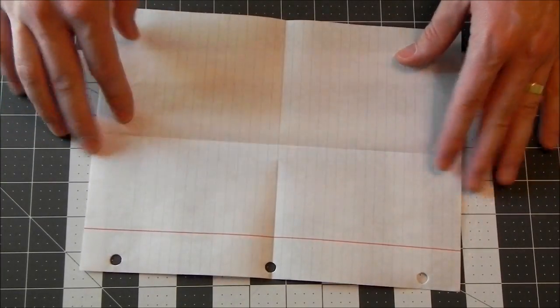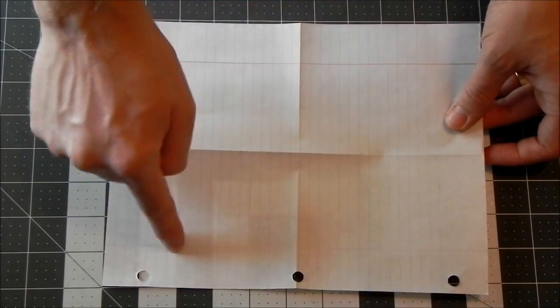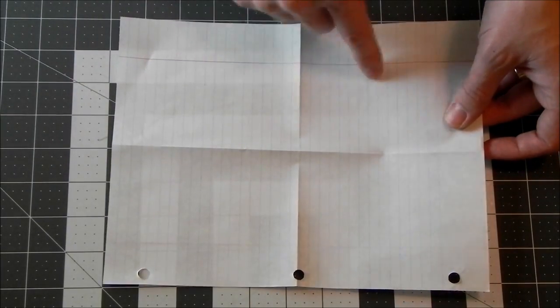So now we've got a good X there. Let's turn the paper over and now we need to get a diagonal fold going through the center. So an X there.